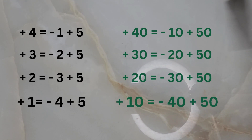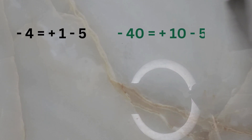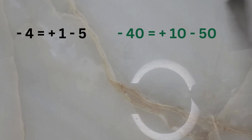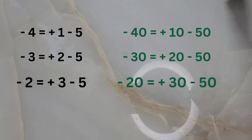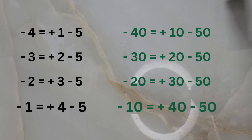Similarly, in order to subtract 40, 30, 20, and 10, again we will use the small friend formula on the tens place. The small friend formula for subtracting four when used on the tens place becomes the formula for subtracting three when used on the tens place, becomes the formula for subtracting two when used on the tens place, becomes the formula for subtracting one when used on tens place.